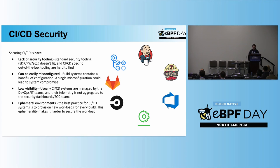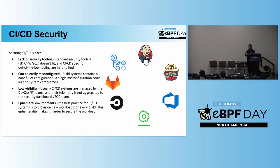Lastly, some systems — for example GitHub Actions, GitLab, and more — are built on ephemeral environments. This means that every build creates a new machine or a new container environment that creates the build and is destroyed afterwards, making security even harder.